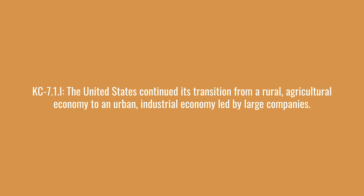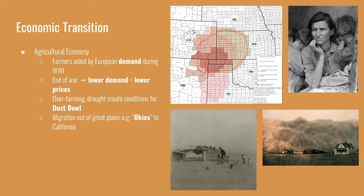The United States continued its transition from a rural agricultural economy to an urban industrial economy led by large companies. The 1920 census showed that for the first time there were more Americans living in urban areas than in rural areas. The agricultural economy had been aided by World War I, as soldiers in other countries were willing to buy American food crops, meaning higher prices for farmers. As soon as the war ended, American farmers were no longer feeding people in Europe, demand went down, prices fell, and farmers in the 1920s were struggling while people in cities prospered.